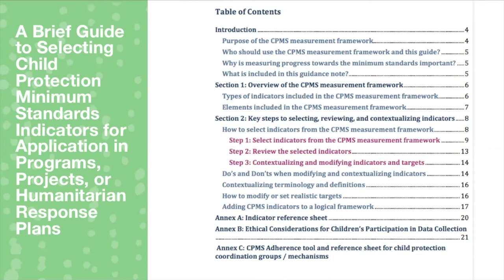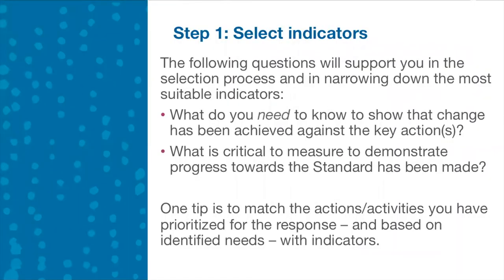The first step is to select the indicators. Key questions to support the selection process include: What do you need to know to show that change has been achieved towards the key actions? What is critical to measure to demonstrate progress towards your selected standard? A useful tip is to match the actions and activities you plan to implement with the indicators, as those activities will be prioritized based on the identified child protection needs in your context.